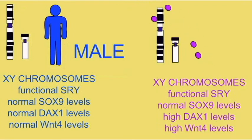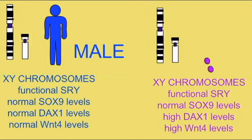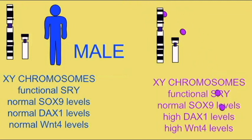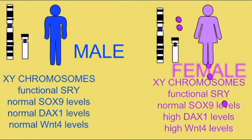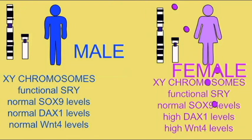it can antagonize WT1 and SF1 in the formation of testes, so that an overexpression of DAX1 will then result in XY individuals developing as females.